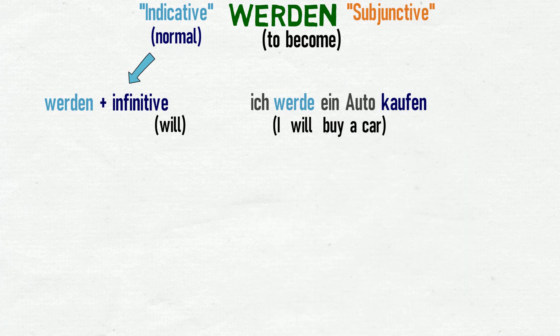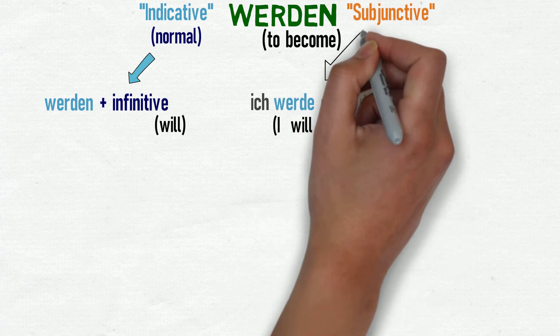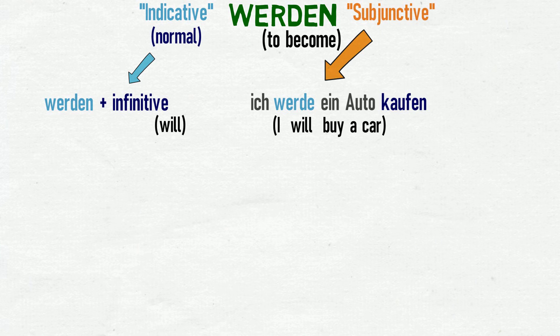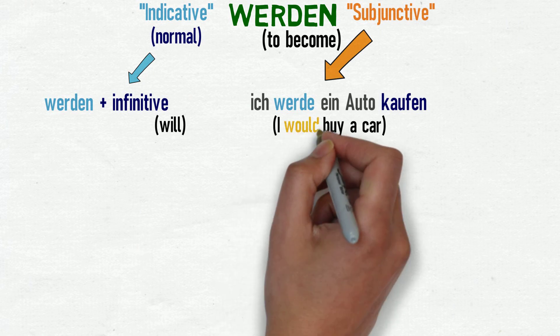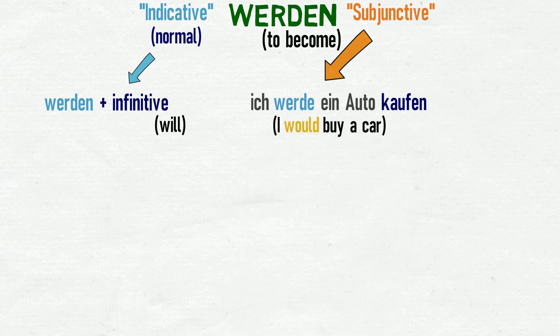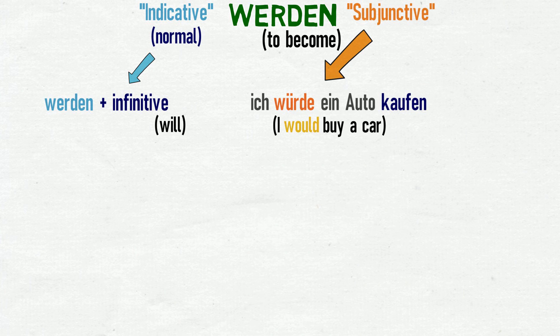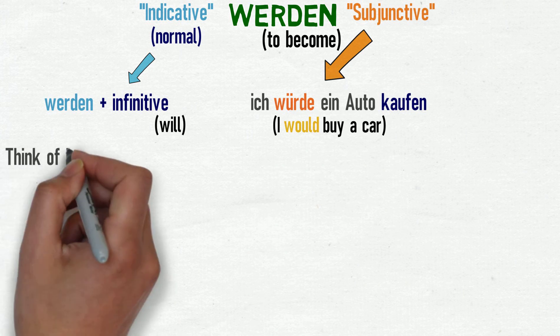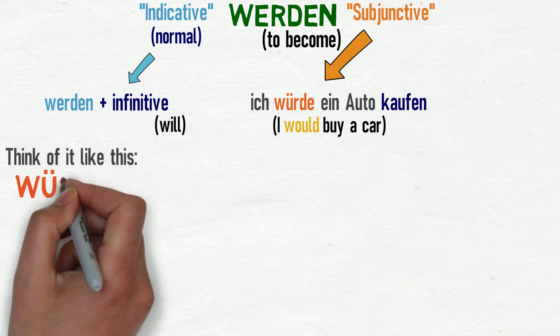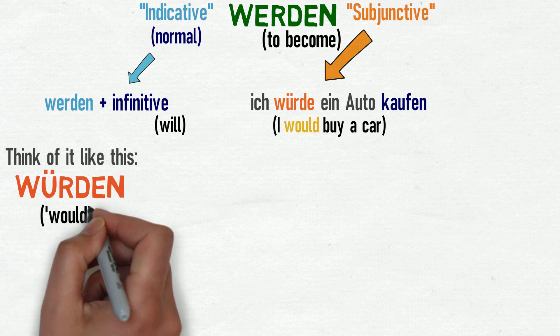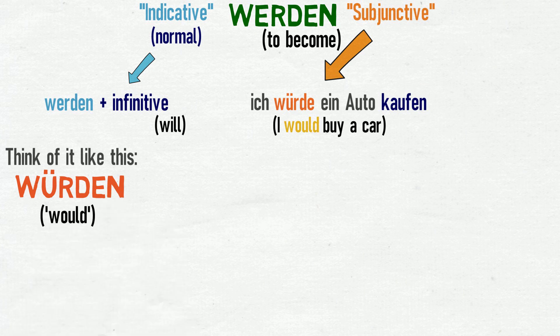Now, if we use the subjunctive form of werden in this sentence, we change the meaning from 'I will buy a car' to 'I would buy a car'. To do this, we use the verb form würde. As an introduction to the conditional tense, you can think of the verb würde as meaning 'would', and it would conjugate like this.